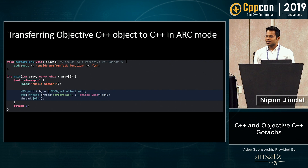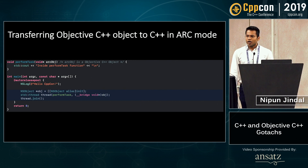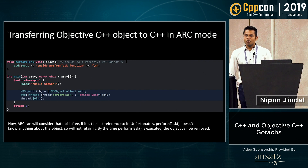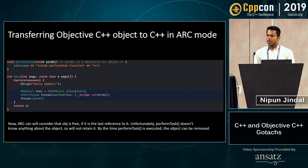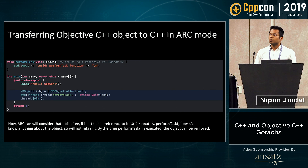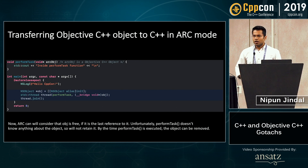The only thing is that the problem starts now. What ARC thinks is that it can actually release this object if this is the last reference to it, and then perform_task doesn't know anything about this object — so it would cause a use-after-free vulnerability.